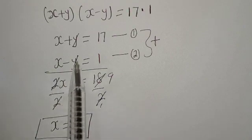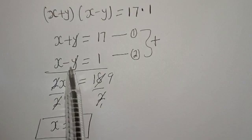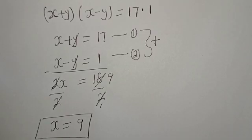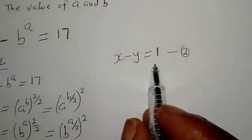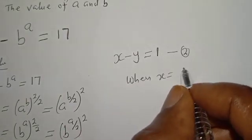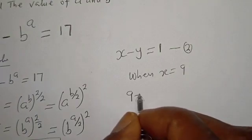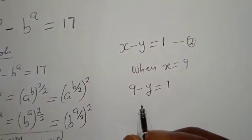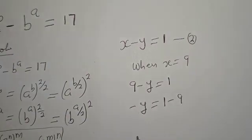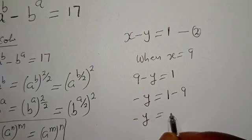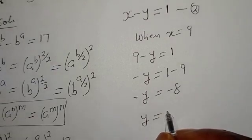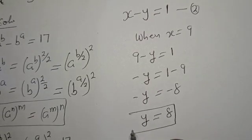Now substitute X equal to 9 into equation 2 to find Y. From X minus Y equals 1, we get 9 minus Y equals 1, so minus Y equals 1 minus 9, which gives minus Y equals negative 8, therefore Y equals 8.